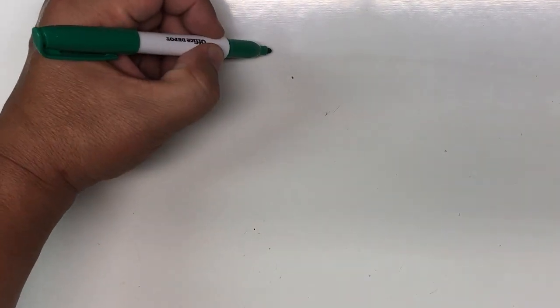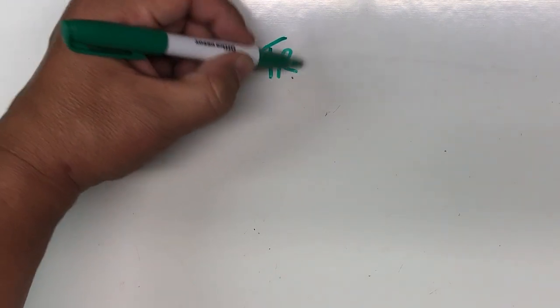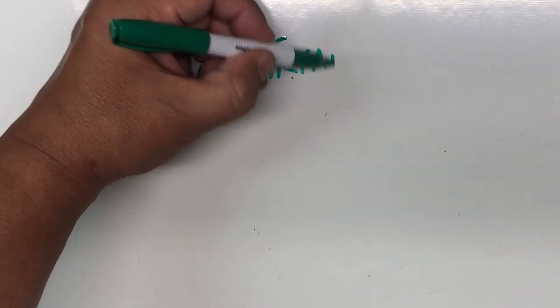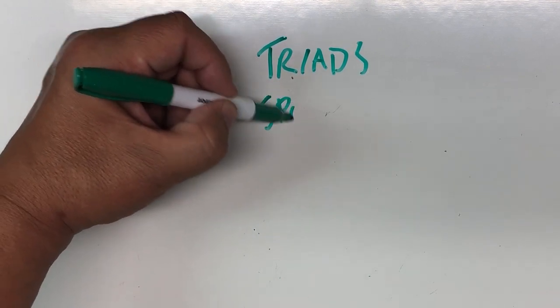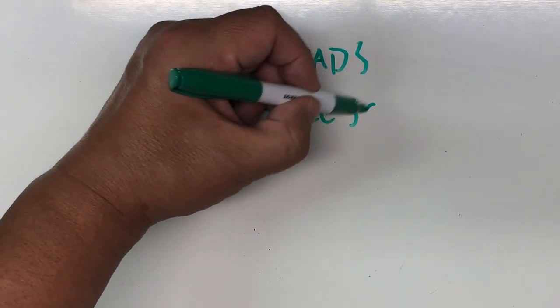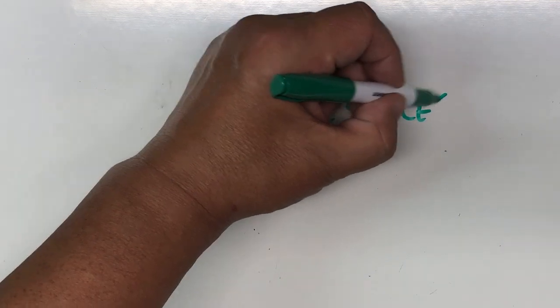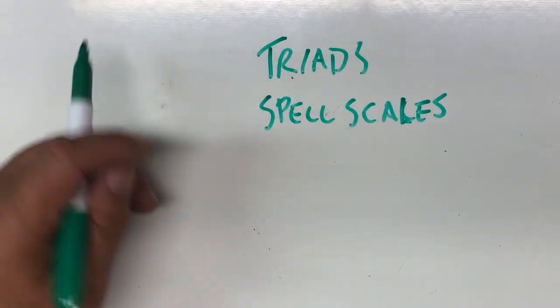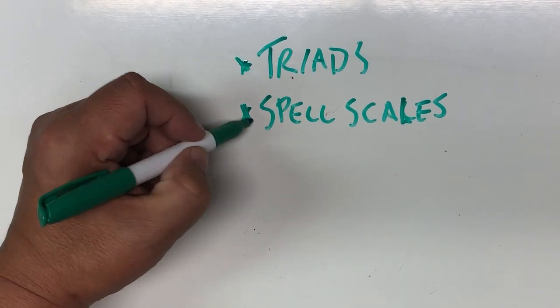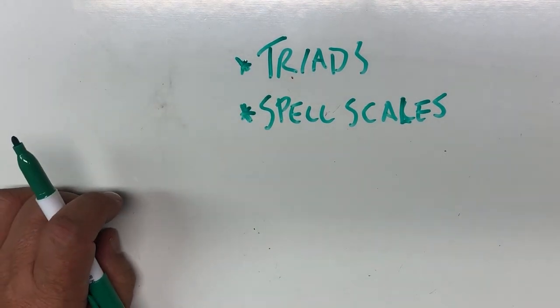So today you're going to get a little training video that says, hey, let's do another column of your triads and let's do a new spell scales worksheet. And that's, of course, pre-midterm work because it's all stuff that you're familiar with.